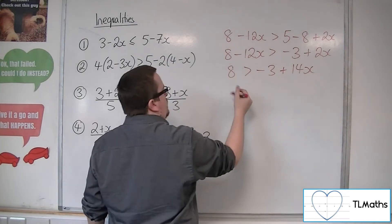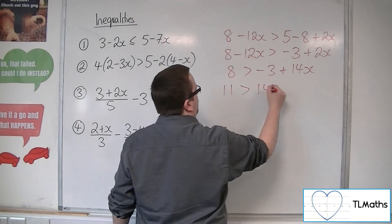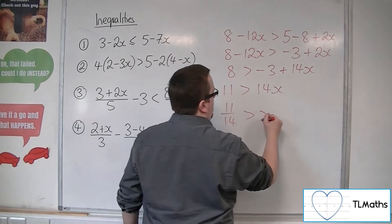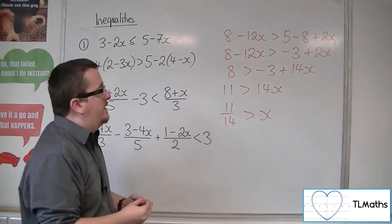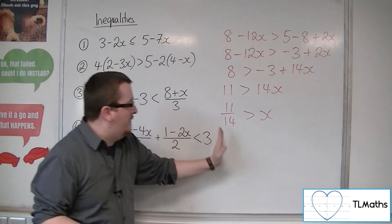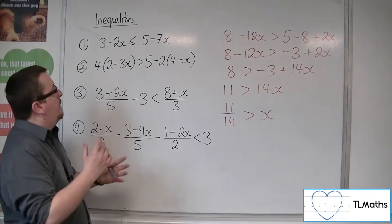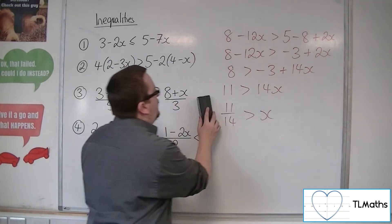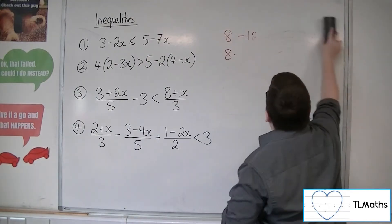Then you can add the 3 to both sides. And then you can divide both sides by 14. So x has to be less than 11 fourteenths. Or 11 fourteenths is greater than x. Whichever way around you want to read it. So that's the first two.